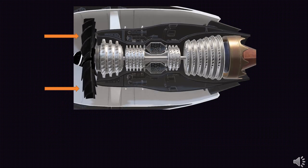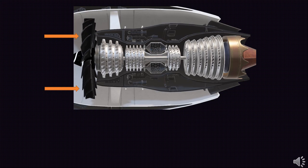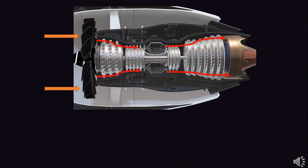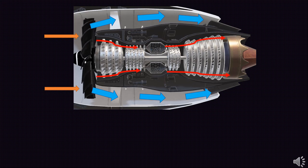The air entering the engine through the fan splits into two parts. One part of the air passes through the core section which consists of the compressors, combustion chamber, and the turbines. The other part of air enters the bypass duct surrounding the core section.